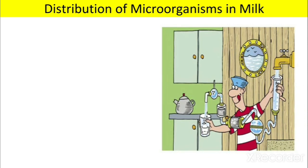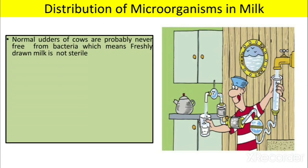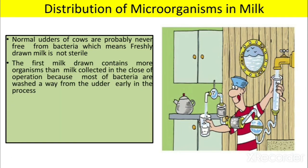Next is the distribution of microorganisms in milk. We sometimes hear news about a person getting infected by milk, because microorganisms present inside contaminated milk can enter the human body and cause infection. The normal udders of cows are probably never free from bacteria, which means freshly drawn milk is not sterile. The first milk drawn contains more organisms than milk collected in a closed operation, because most bacteria are washed away from the udder early in the process.